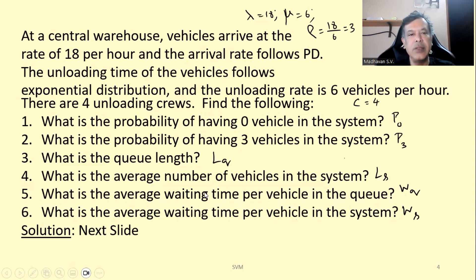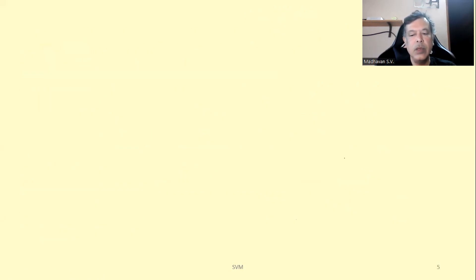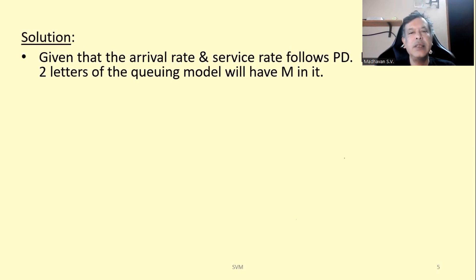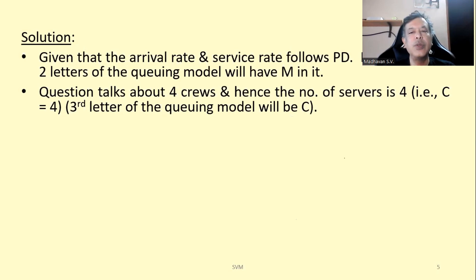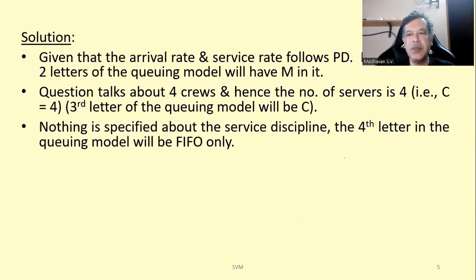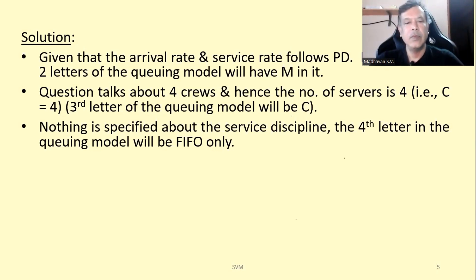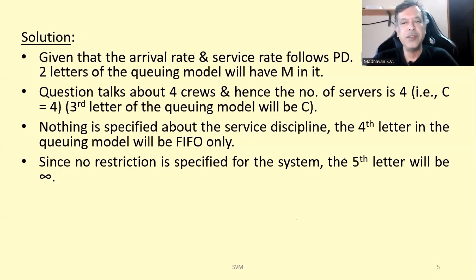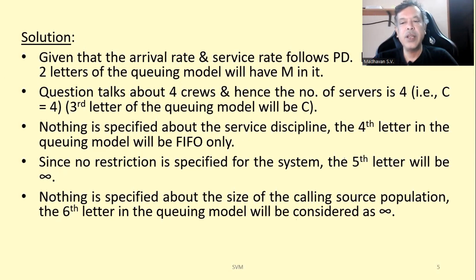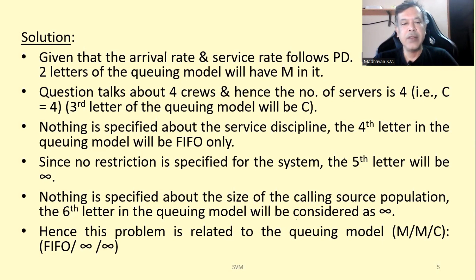Now we will solve it. Given that both the service rate and arrival rate follow Poisson distributions, the first two letters of the queuing model will be M and M. The question mentions four crews, so the number of servers is four, making the third letter C. Nothing is specified about the service discipline, so the fourth letter is FIFO. Since no restriction is specified for the system, the fifth letter is infinity, and since nothing is specified about the calling source population size, the sixth letter is also infinity. So the model is M/M/C : FIFO/infinity/infinity.